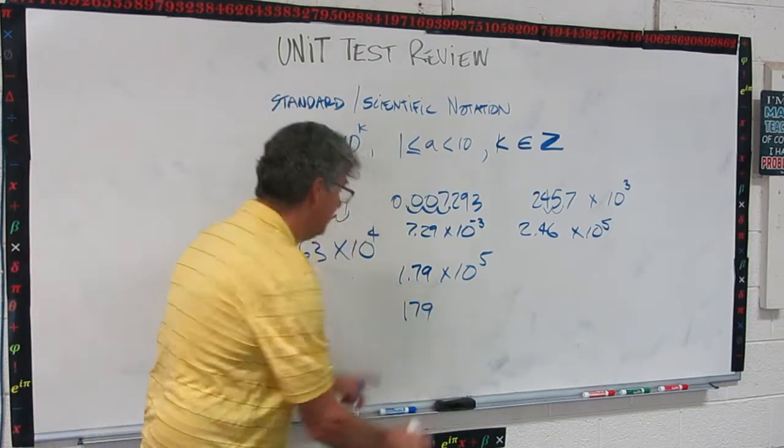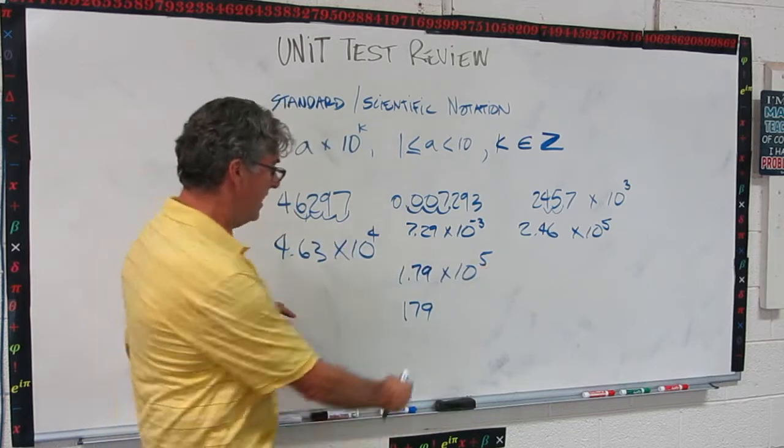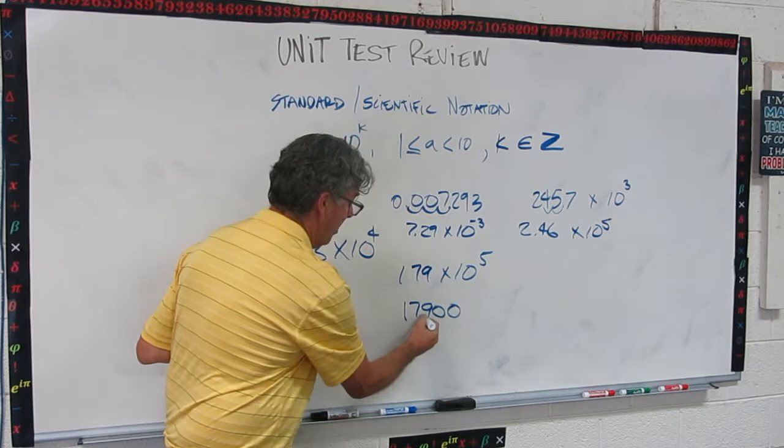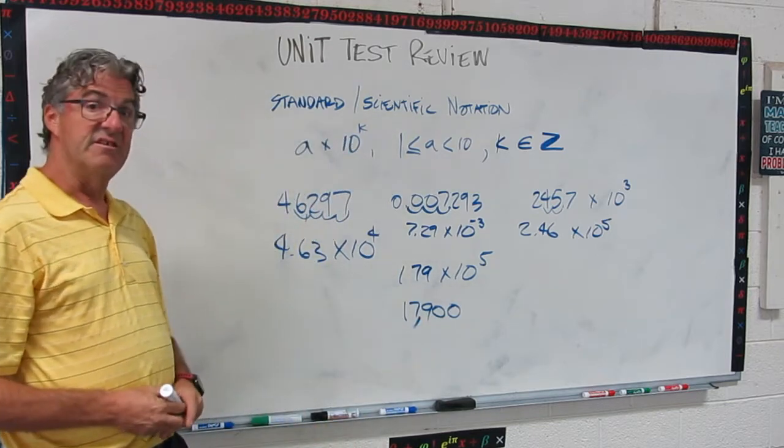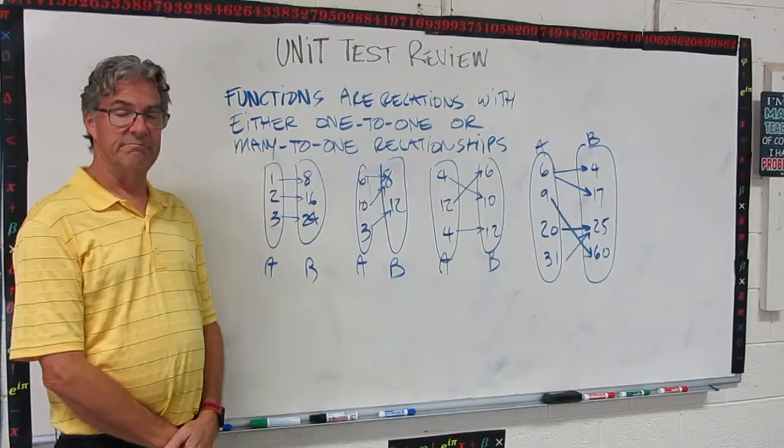Here's how I would do that. 1, 7, 9. We're going to lose our decimal because this is big. It's a positive exponent. And we're going to go 1, 2, 3, 4. So it's going to be 17,900.